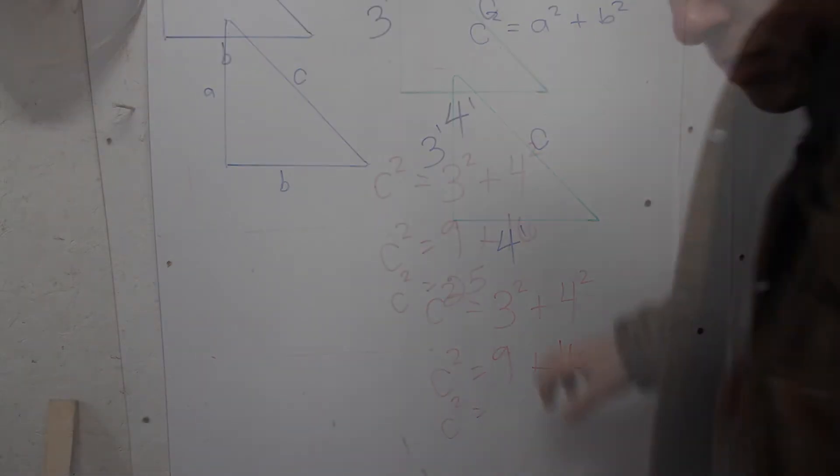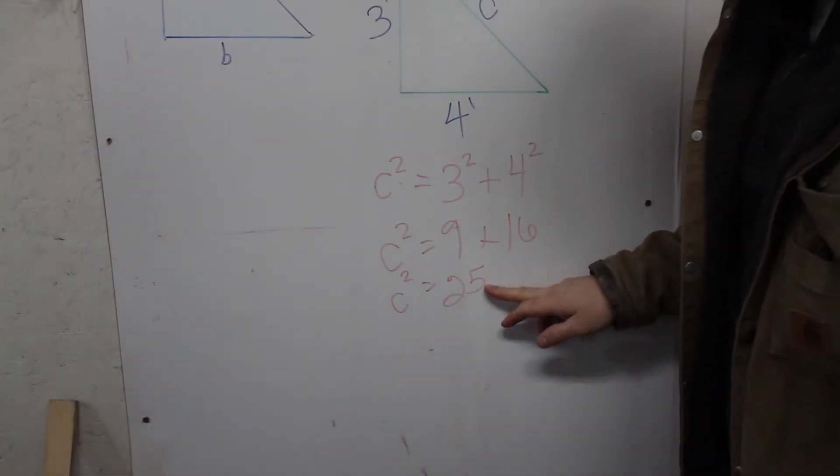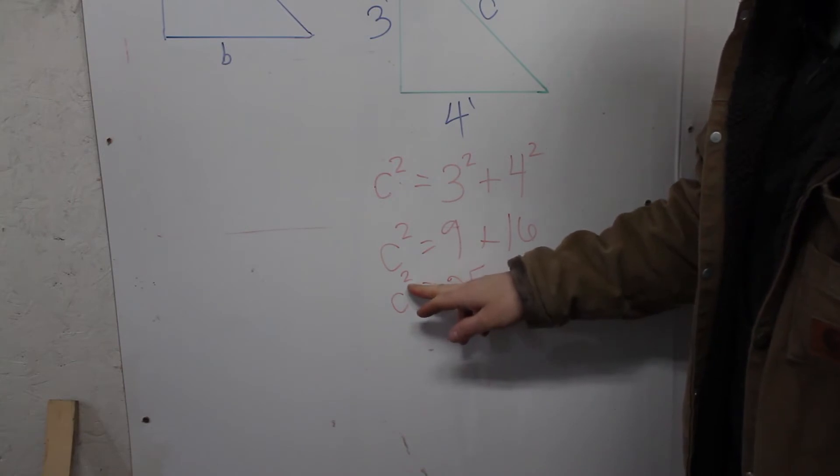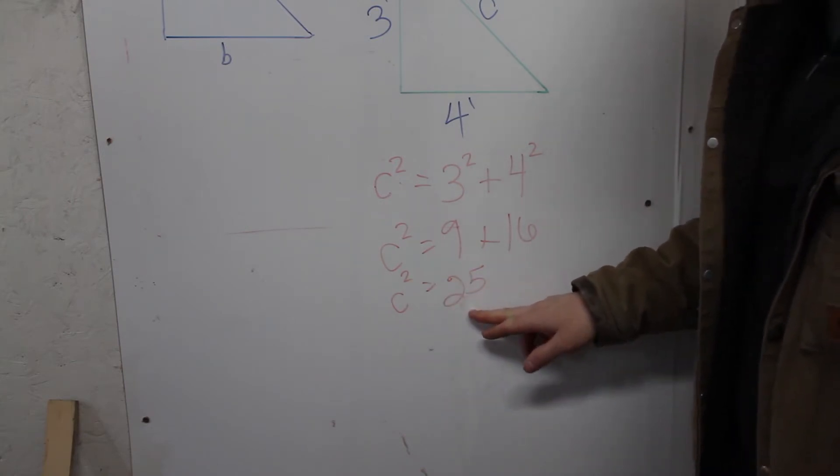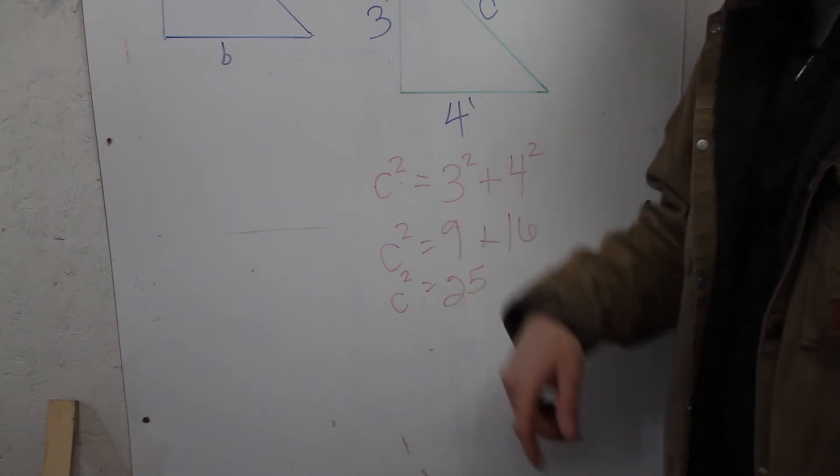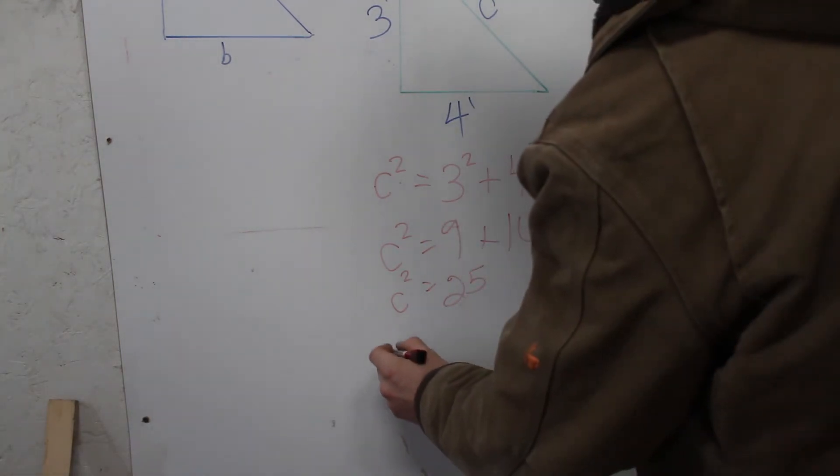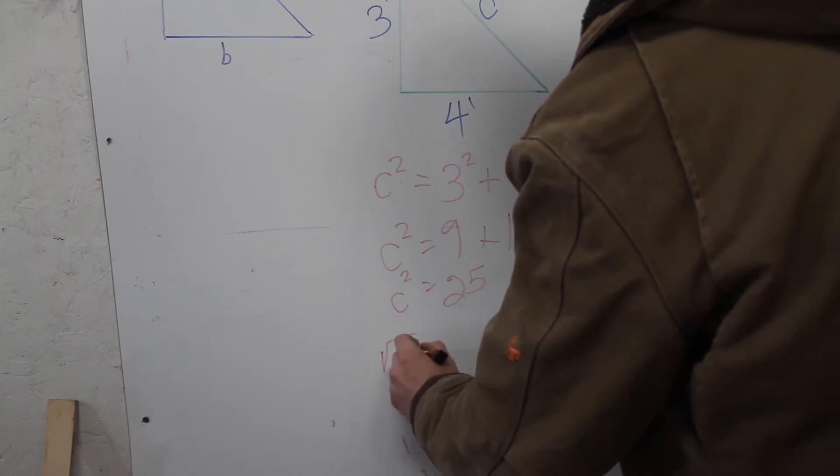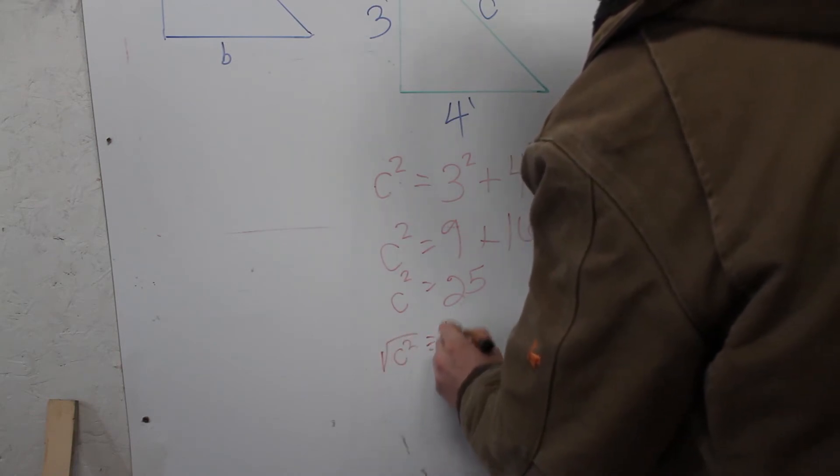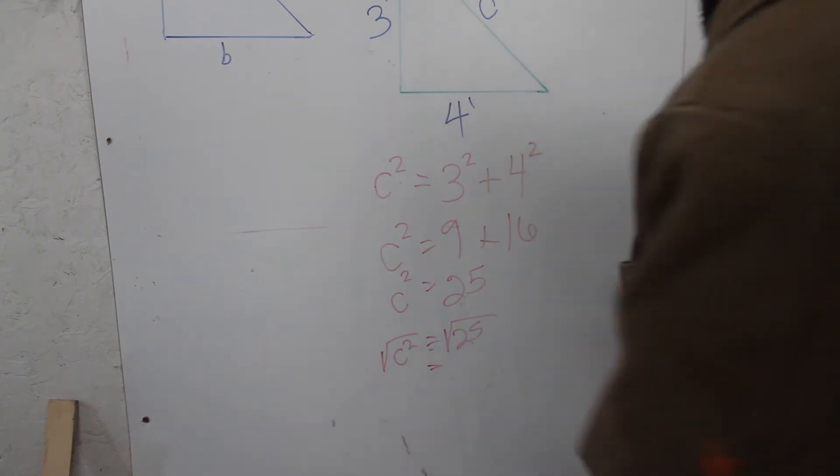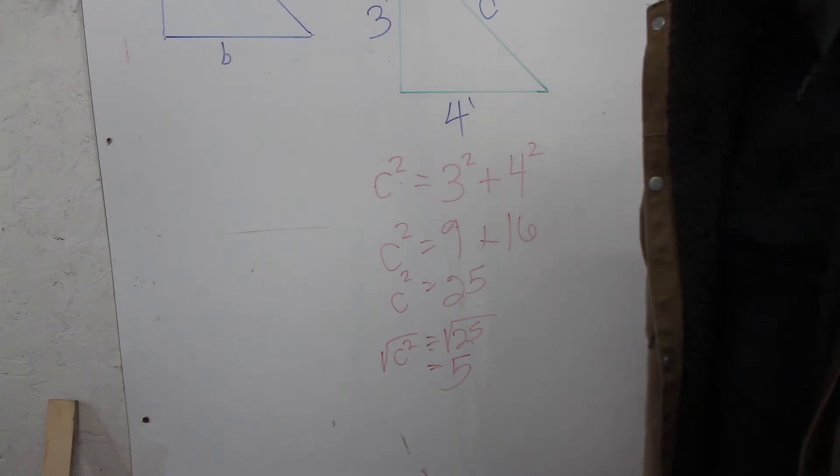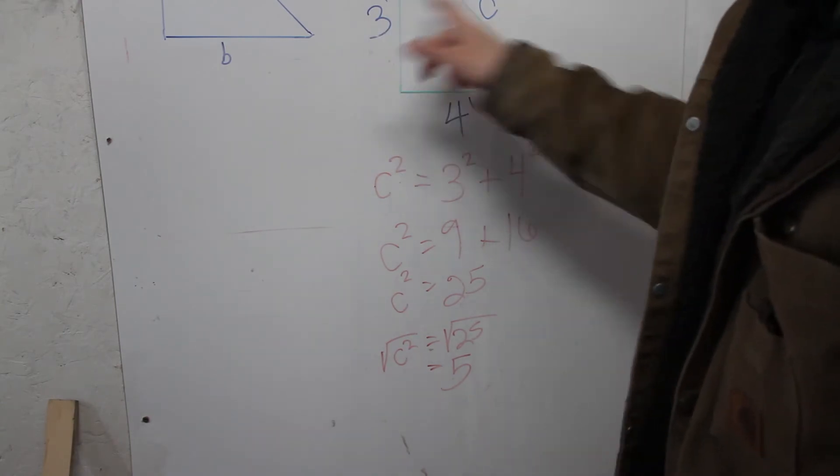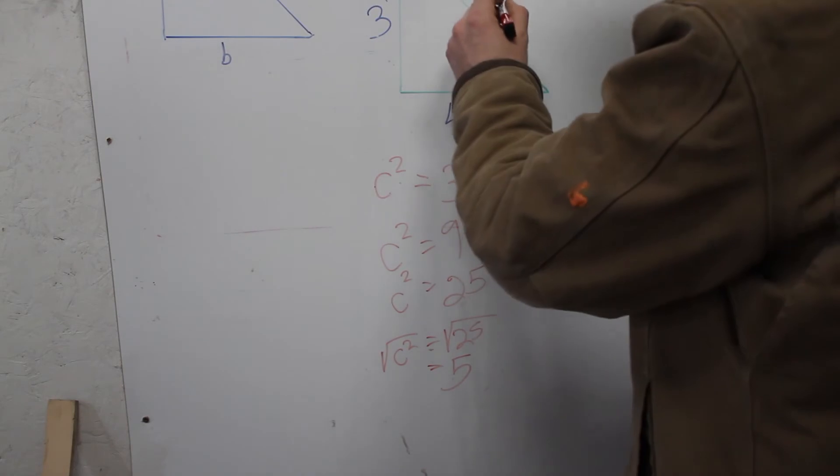C squared equals now 25. That's not the answer yet; we still have C squared, so that's whatever this is times itself equals 25. So you have to use the root function on your calculator, which I'll show you in the next example, but basically it's the square root of C squared equals the square root of 25. If you put that into your calculator you'll see that that's five. I don't do that off the top of my head - the only reason I know that is because this is a really common triangle that we use in carpentry.